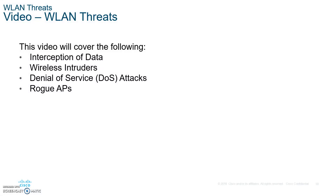Wireless LAN Threats includes interception of data — somebody eavesdropping on the data — denial of wireless intruders, and denial of service attacks, which could prevent you from having access to your access point. There are also rogue access points — fake access points — where somebody can put one up and lure you into accessing their free Wi-Fi, acting as a man-in-the-middle or an evil twin access point. We have to protect ourselves against all of these different types of threats.